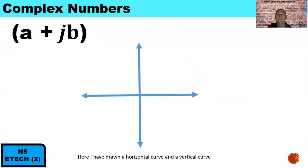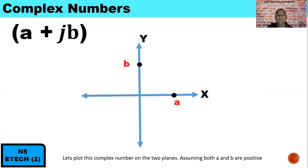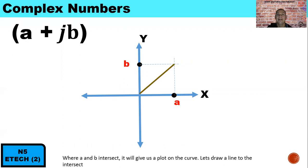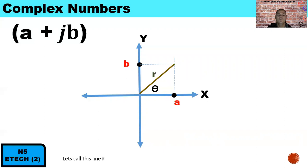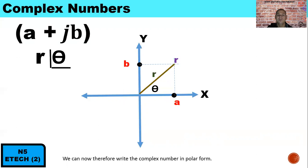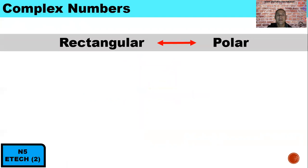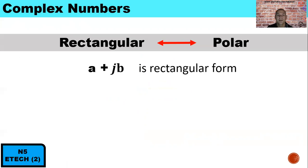On an Argand diagram, the y-axis represents the imaginary part and the x-axis represents the real part. Plotting a complex number where both a and b are positive, we draw a line to the intersection of a and b. This line is r and the angle is theta, giving polar form. We can convert rectangular to polar or polar to rectangular depending on the calculation needed. In RLC circuits, resistance R is on the positive real axis, inductive reactance XL is positive on the imaginary axis, and capacitive reactance XC is negative on the imaginary axis. We add and subtract in rectangular form, and multiply and divide in polar form.